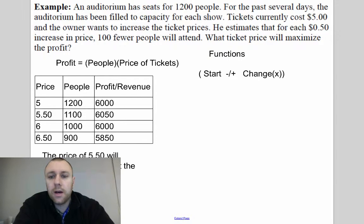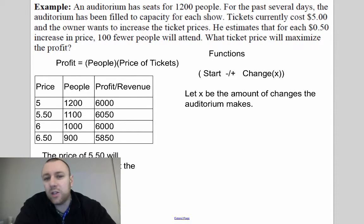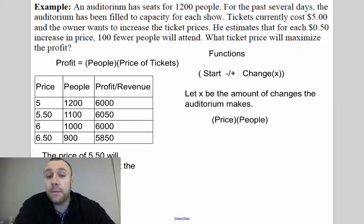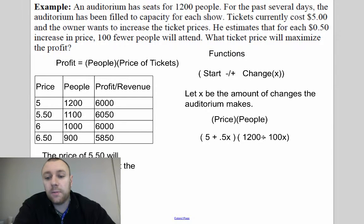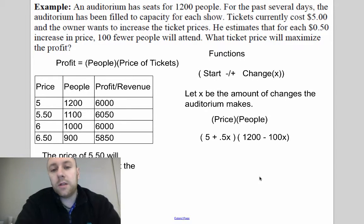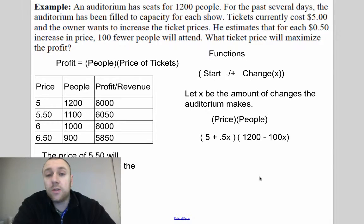Most of the time you have to use a quadratic function instead of a table. To do that, you create two parentheses: the first represents price — starting at five dollars plus 0.5x — and the second represents people — starting at 1200 minus 100x. Here x is the number of 50-cent price changes the auditorium makes. You then distribute or multiply these two expressions together.